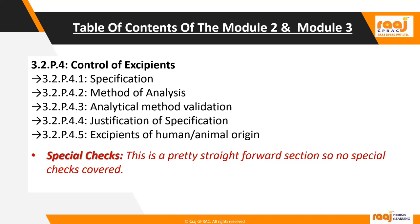P4 is the control of excipients, wherein you provide specifications for whatever excipients you are using, along with method of analysis, analytical method validation, and justification. If excipients are of human or animal origin, you need to provide EDQM/TSE/BSE certificates. This is a straightforward section, and we will walk through the actual section compiled in CTD format under Module 3.